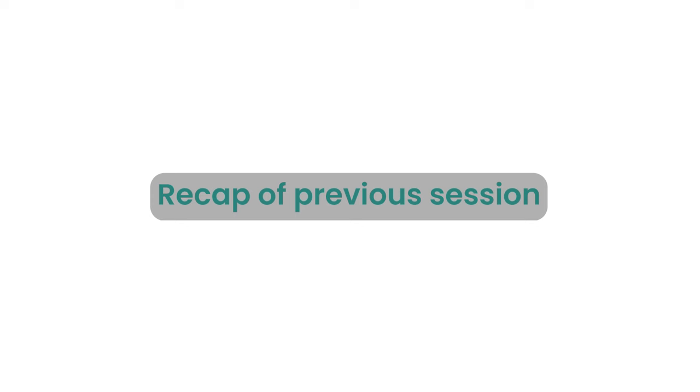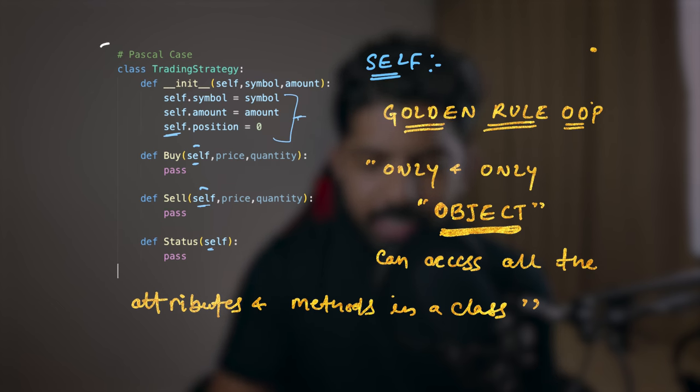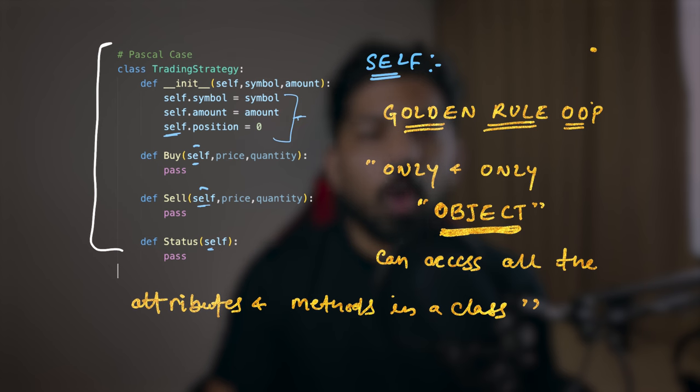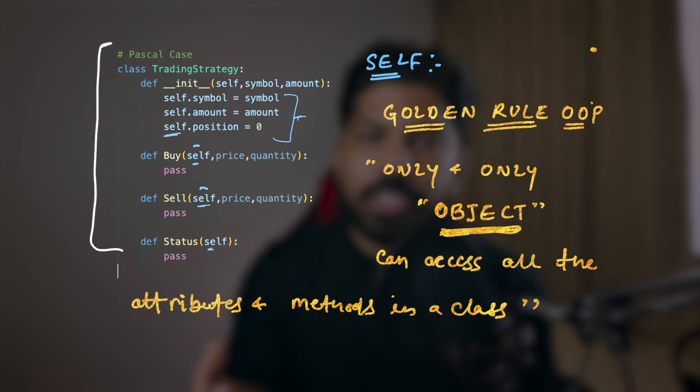Welcome back to day 10 of the 100 days of hell with Python algo trading. Today I'm very happy that we are able to complete 10% of this 100 days journey. Let's quickly revise what we have done in the previous session — constructor functions, the self keyword, and the golden rule of object-oriented programming — and then we will proceed with today's session.